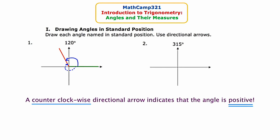Let's draw the next angle, 315 degrees. I'll start by drawing the initial side along the positive x-axis. A full sweep around is 360 degrees, and 315 is 45 degrees less than that, so I'll come back 45 degrees and draw in the terminal side. Now I'll use a blue directional arrow — without it, I wouldn't know whether the intended angle is the big one or the small one. I place my pen tip on the initial side and sweep counterclockwise to the terminal side to indicate 315 degrees. On this slide we've seen two examples of drawing positive angles with counterclockwise directional arrows.